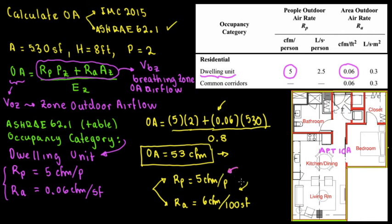But if you're talking about the IMC, you're going to be talking about, for this unit space, you need at least 0.35 air changes per hour, but no less than 15 CFM per person. This is based on the International Mechanical Code. And this is based on ASHRAE 62.1. And the other one is going to be the IMC, International Mechanical Code.